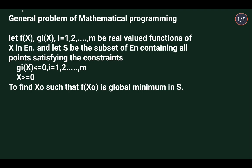Let f of x, g_i of x where i is equal to 1, 2, ... m be real valued functions of x in E_n, and let S be a subset of E_n containing all points satisfying the constraints g_i of x is less than or equal to 0, i equal to 1, 2, ... m, and x greater than or equal to 0. To find x-naught such that f of x-naught is a global minimum in S.